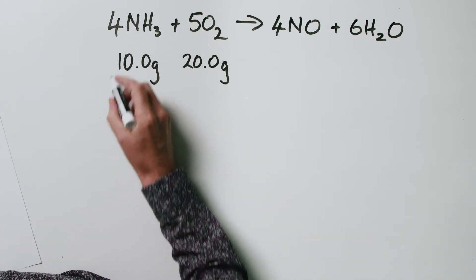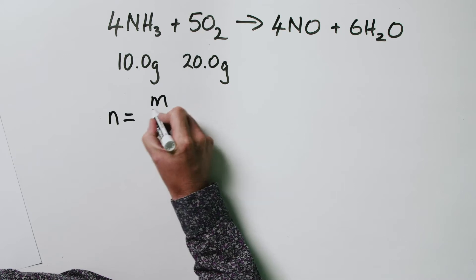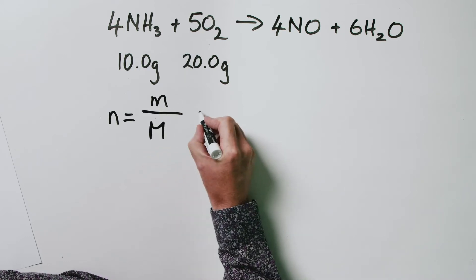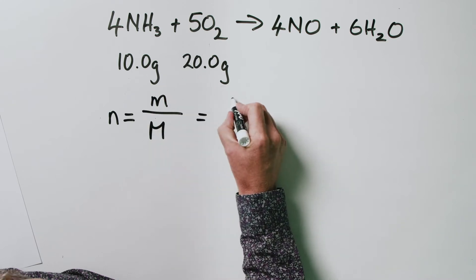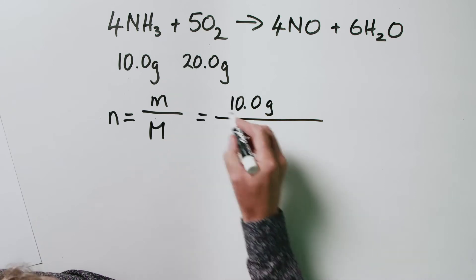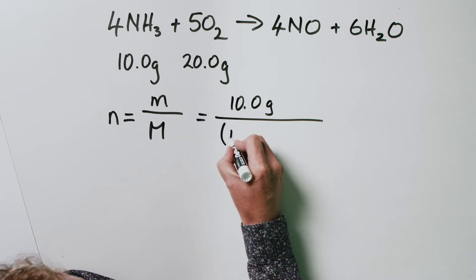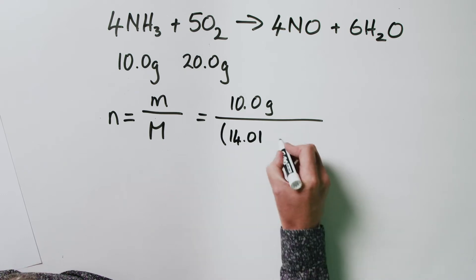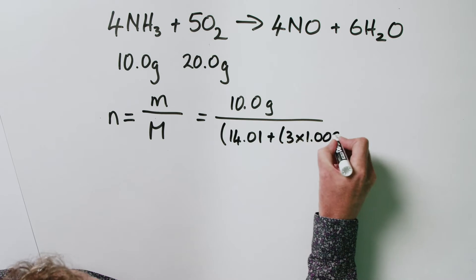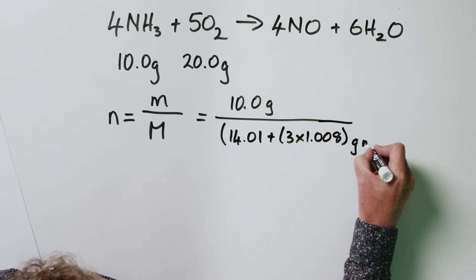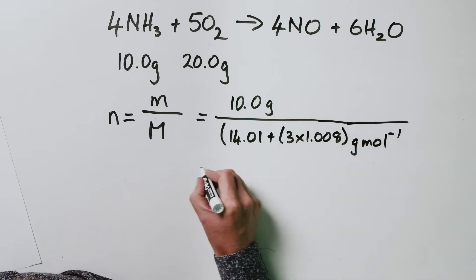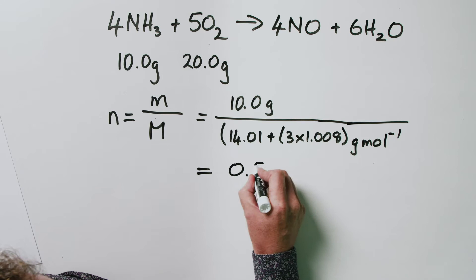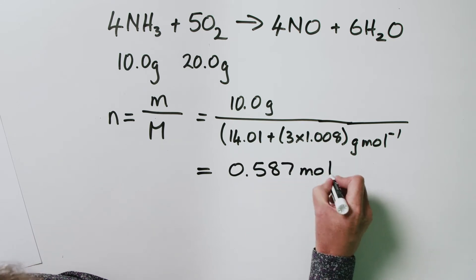We've got 10 grams of ammonia and 20 grams of oxygen. The first thing we're going to do is calculate the amounts of both. The number of moles of ammonia equals mass divided by molar mass: 10.0 grams divided by 14.01 plus three times 1.008 grams per mole, and that gives us 0.587 moles of ammonia.